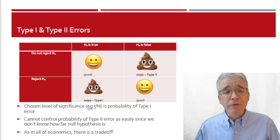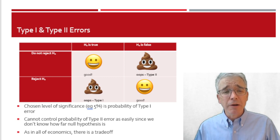As in all of economics, there's a trade-off. The lower we drive down the probability of type 1 error, the higher, therefore, type 2 probability error becomes.